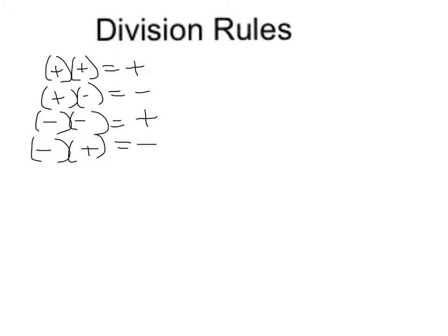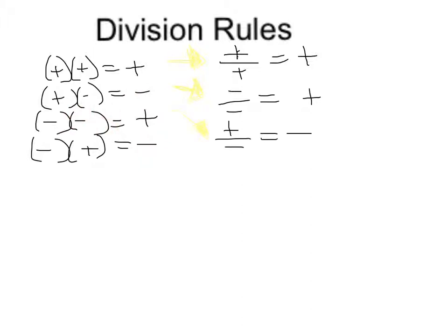Now we're going to go into our division rules. Remember, using our fact families, our division rules should be basically the same as our multiplication rules. If a positive times a positive is positive, then a positive divided by a positive should also be positive. If a positive times a negative is negative, then a negative divided by a negative should give you a positive. If a negative times a negative is positive, then working backwards, a positive divided by a negative should get you a negative. And if a negative times a positive is negative, then working backwards, a negative divided by a positive should get you a negative.